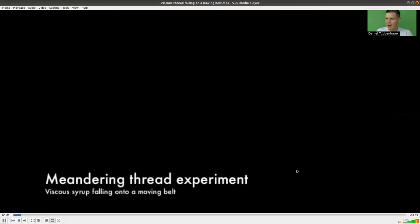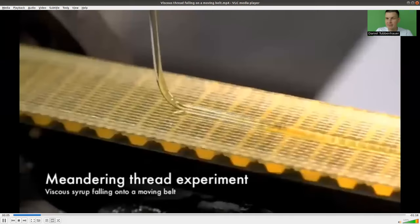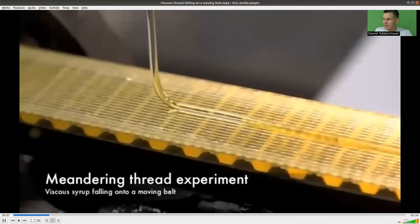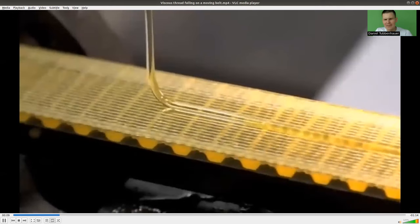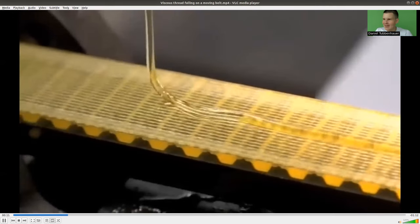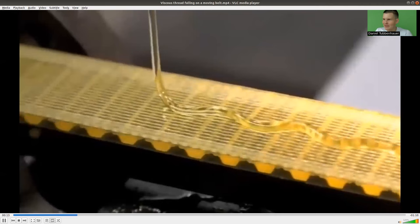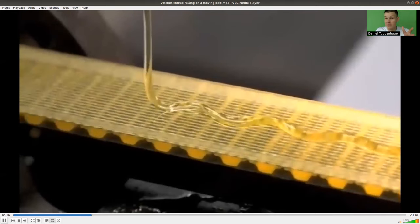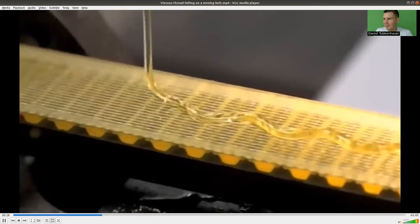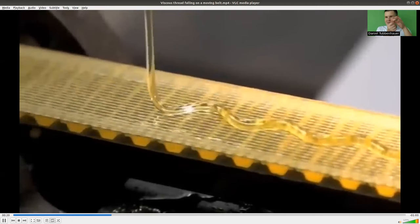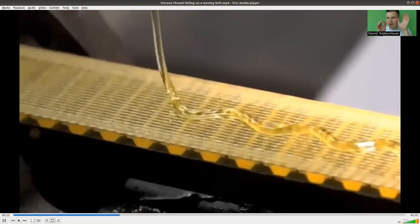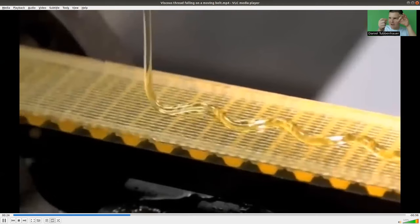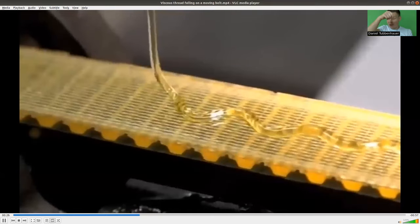Here we are. Some syrup or honey is falling on a moving belt and we'll see some funny patterns. At first it looks like we can describe this, it's not very difficult. Then it starts to do some interesting movements. The belt always moves at the same speed.